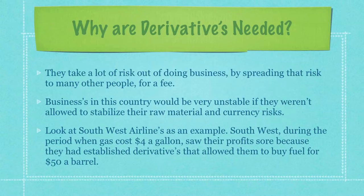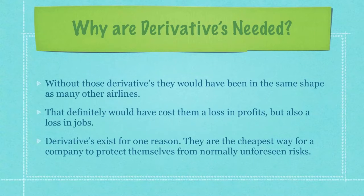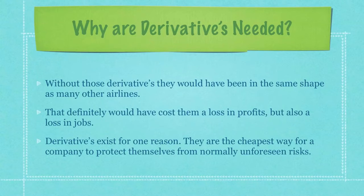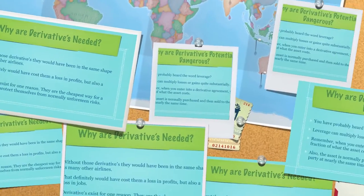Let's look at Southwest Airlines as an example. During the period when gas costs skyrocketed to $4 a gallon, Southwest saw their profits soar because they had established derivatives that allowed them to buy fuel for roughly $50 a barrel. Without those derivatives, they would have been in the same shape as many other airlines — that would have cost them a loss in profits but also a loss in jobs. Derivatives exist for one reason: they are the cheapest way for a company to protect themselves from normally unforeseen risk.